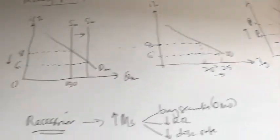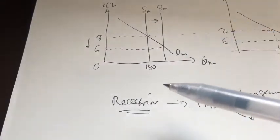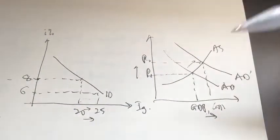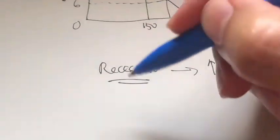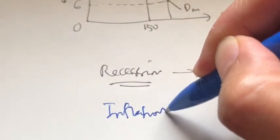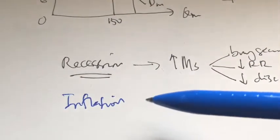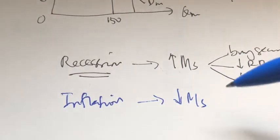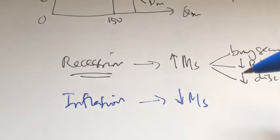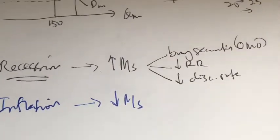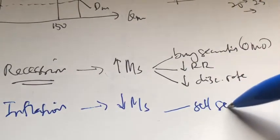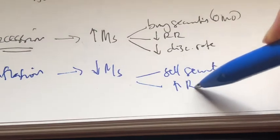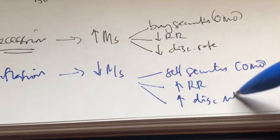Remember, the problem just now was recession — we want the aggregate demand curve to shift to the right, and that's exactly what we've done. Now say we have an inflation problem. When we have inflation, the government would want to reduce money supply. This is called the tight money policy or the restrictive monetary policy. The central bank can achieve this by selling securities through the open market, or by increasing the reserve ratio, or by increasing the discount rate.